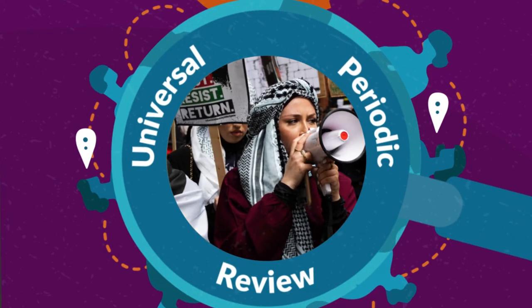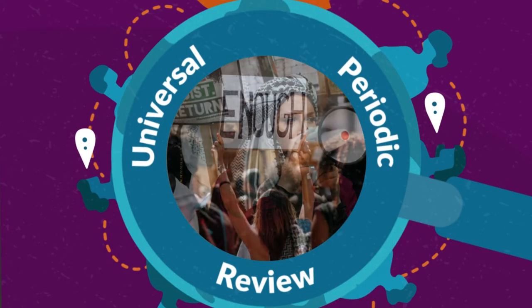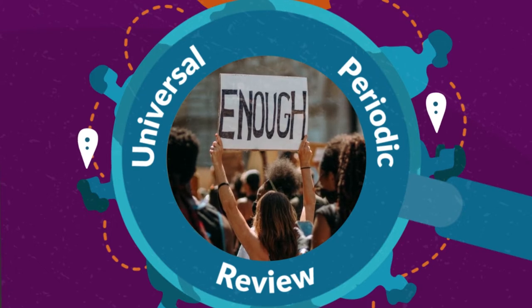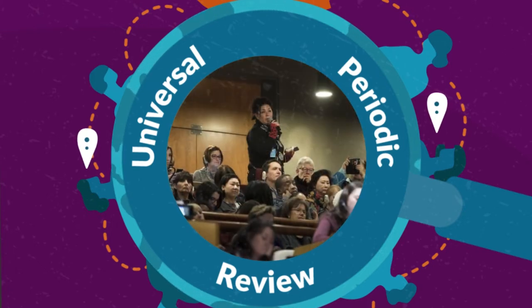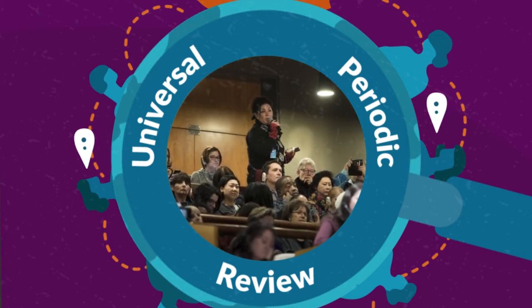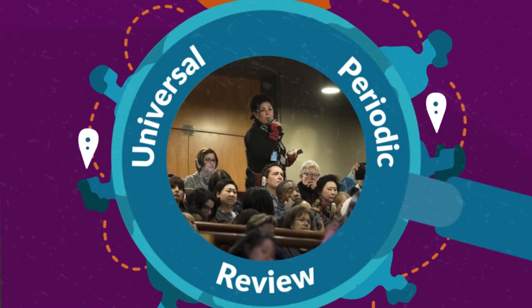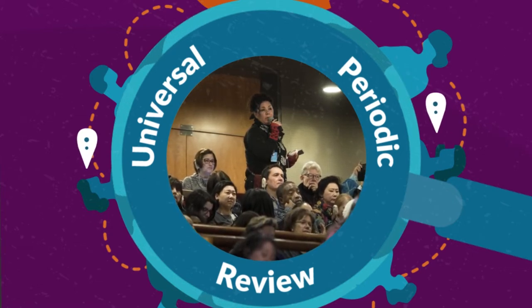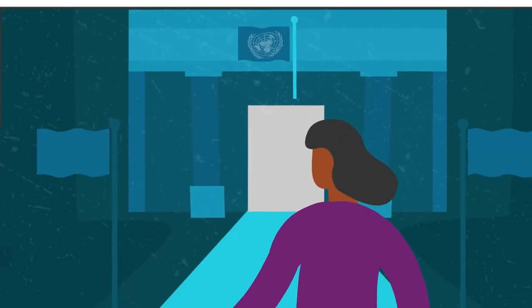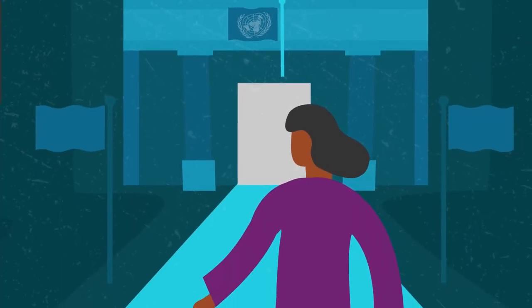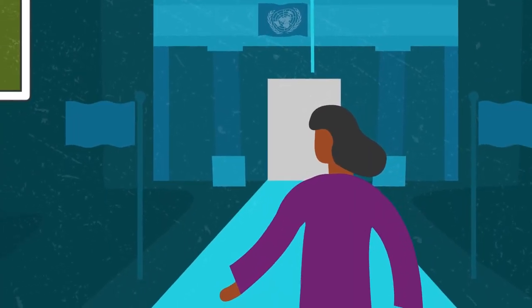The scope and breadth of the UPR means that you, as a human rights defender, can use it to raise awareness of the human rights situation in your country and to hold states accountable. Although the UPR process is led by states, you can take part at every stage in a variety of ways.